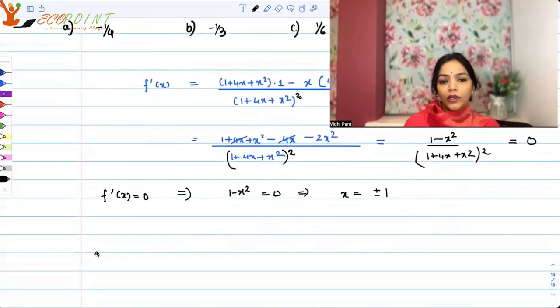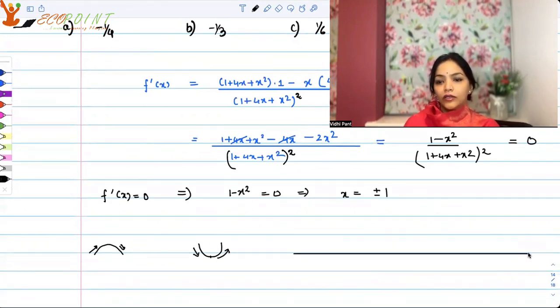Now when you get a maximum, what happens? The function increases and then decreases. When you get a minimum, why are you getting it? Because the function must have decreased and then increased, right? So let's look around. Let's look around these points. So you have minus 1 here, 0 here, 1 here, say 2 here and minus 2 here. So let's look around what's happening around minus 1 and 1.